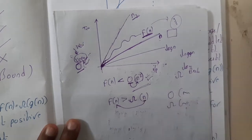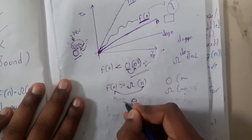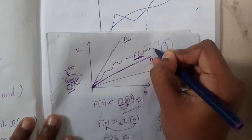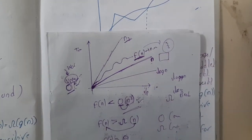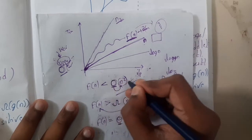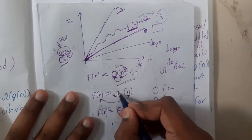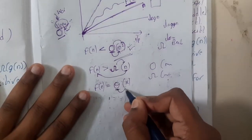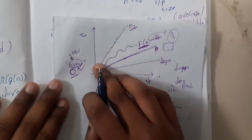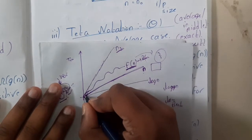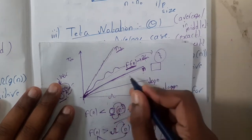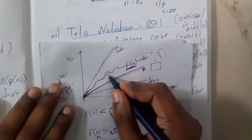Big O indicates maximum, Omega indicates minimum. So what is the average case? Theta — it says the exact value. Theta is the average case: Big O gives maximum time, Omega gives minimum time, and Theta gives average time, approximately aligned with f(n).